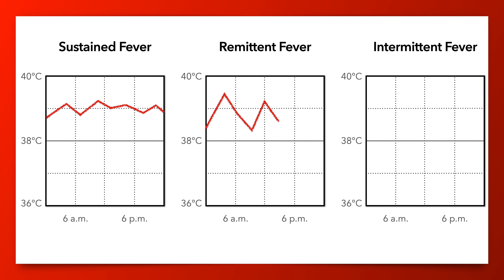Remittent fevers are similar in that the body temperature doesn't return to normal unless an antipyretic is provided, but they have more fluctuation than sustained fevers — that is, they oscillate more than 1 degree Celsius daily. This is the most common type of fever pattern and it can occur with a wide variety of etiologies.